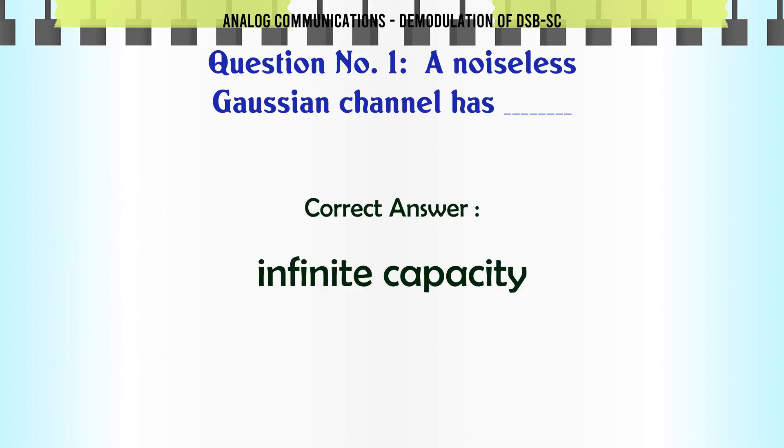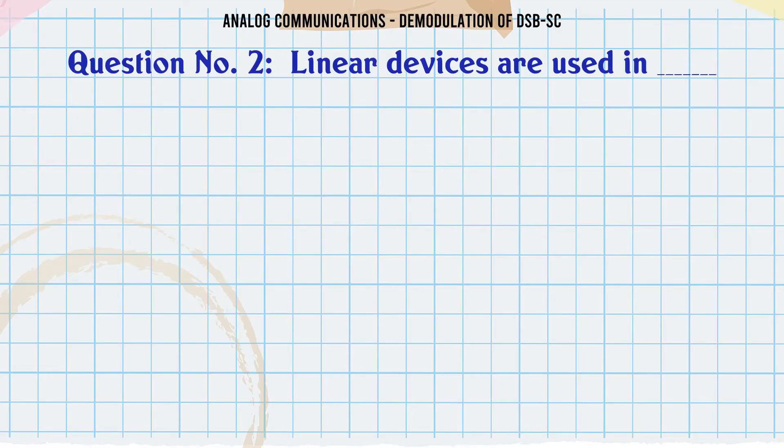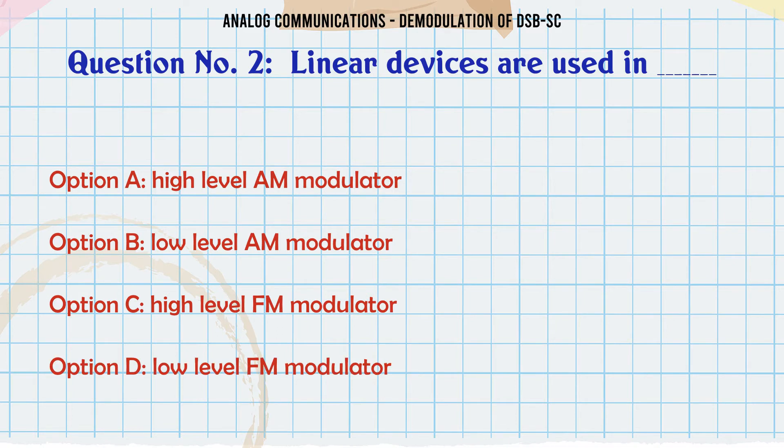Linear devices are used in: A, high level AM modulator; B, low level AM modulator; C, high level FM modulator;